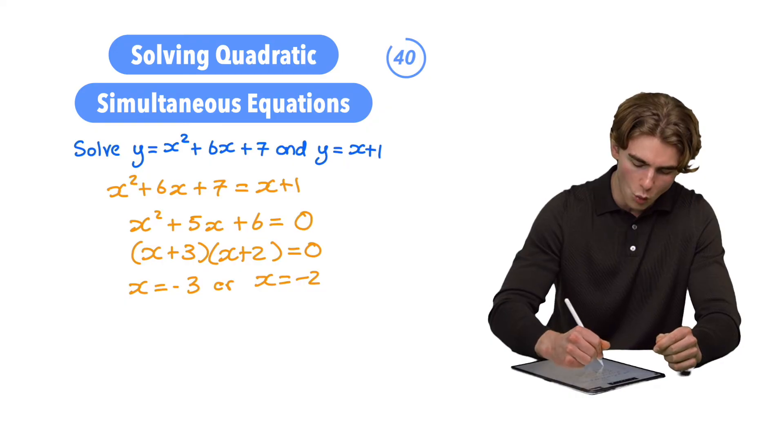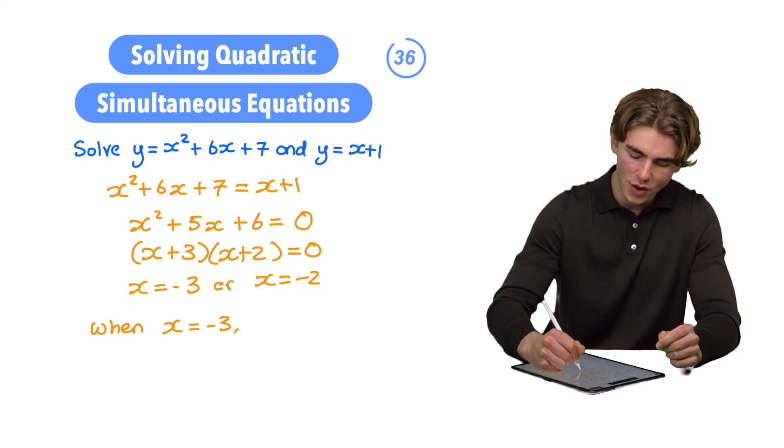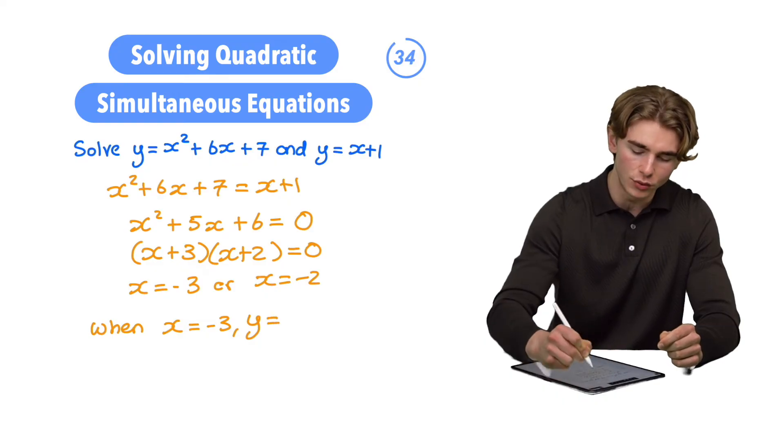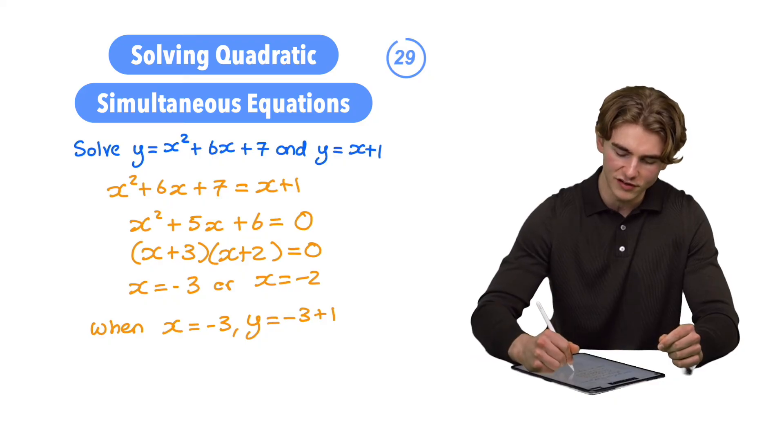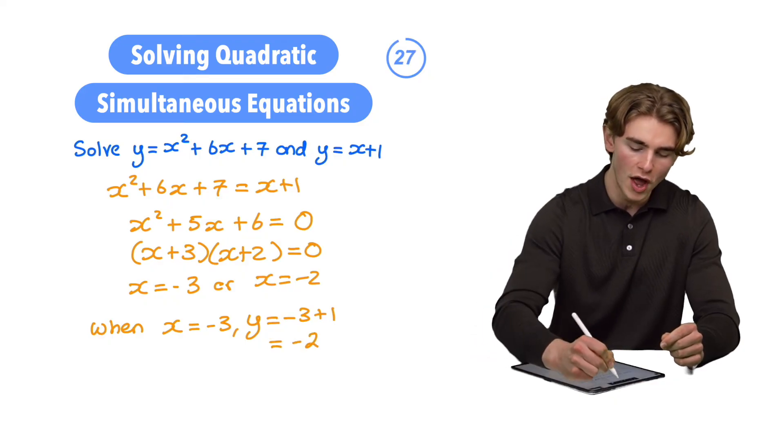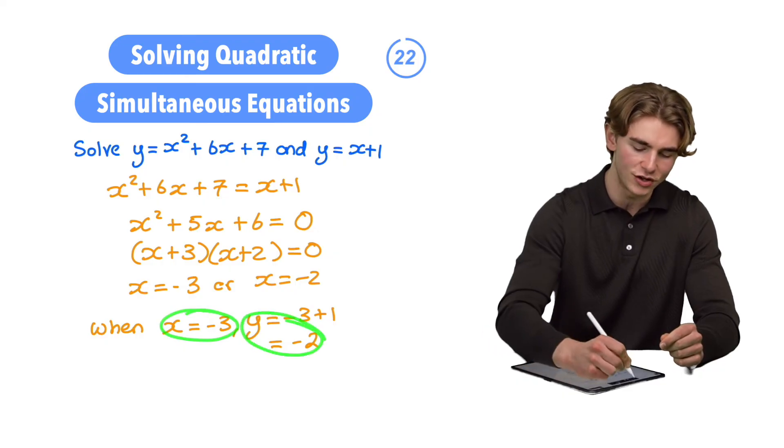So when x is equal to -3, y is going to be equal to, we know it's equal to x + 1, so we can say it's going to be -3 + 1. What's the value of -3 + 1? That's going to be -2. So one of our answers is when x = -3, y = -2.